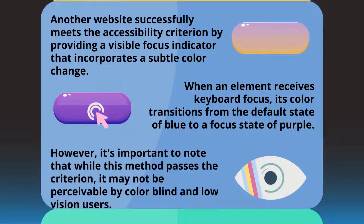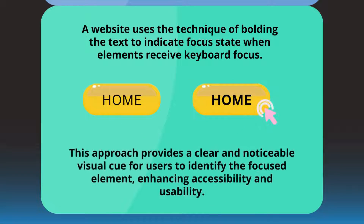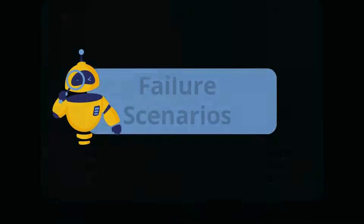However, it is important to note that while this method passes the criteria, it may not be perceivable by colorblind and low-vision users. In another example, a website uses the technique of bolding the text to indicate focus state when elements receive keyboard focus. This approach provides a clear and noticeable visual cue for users to identify the focused element, enhancing accessibility and usability.